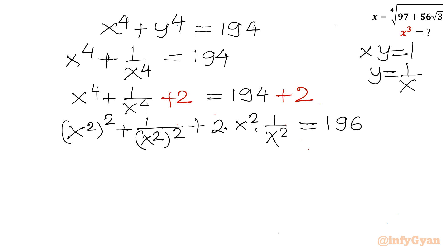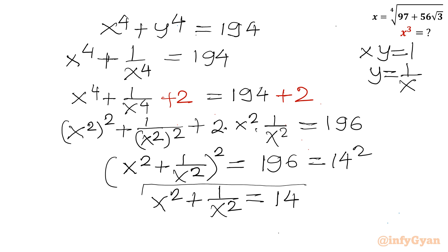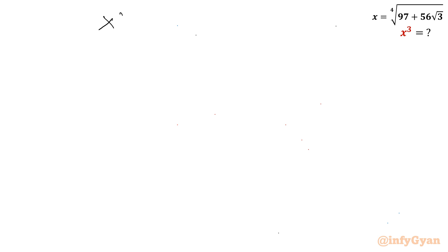Using the identity a squared plus b squared plus 2ab equals (a plus b) whole square, the left-hand side becomes (x squared plus 1 over x squared) whole squared equals 196, which is 14 squared. Taking the square root of both sides, the accepted value gives x squared plus 1 over x squared equals plus 14 only.